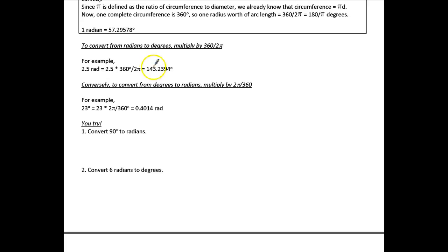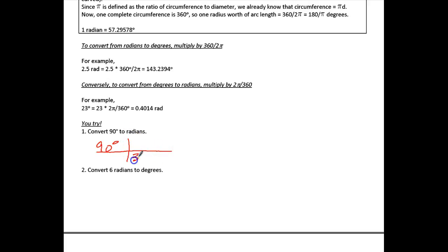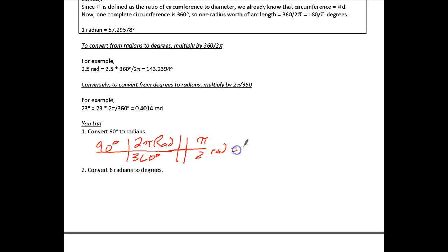First thing we need to do is convert 90 degrees to radians. There are two ways to measure angles: degrees, and using the unit circle to convert to radians. So if I want to convert 90 degrees to radians, I start with 90 degrees, and for every 360 degrees I have 2π radians. That gives me π/2 radians, and π divided by 2 is about 1.57 radians.